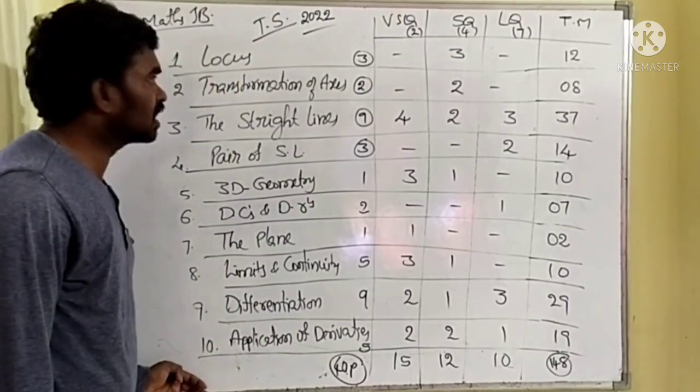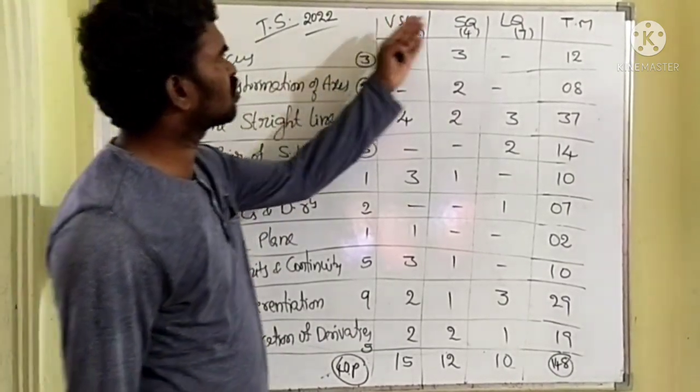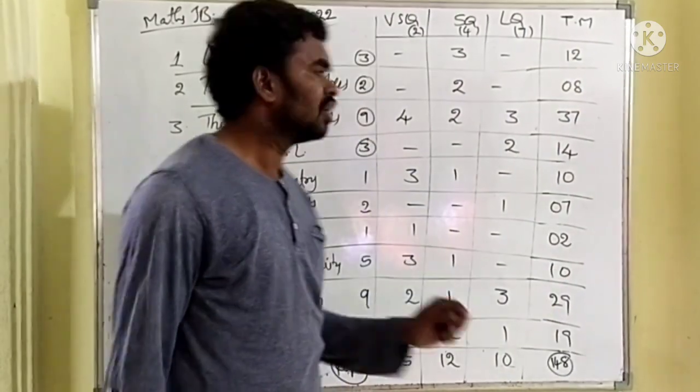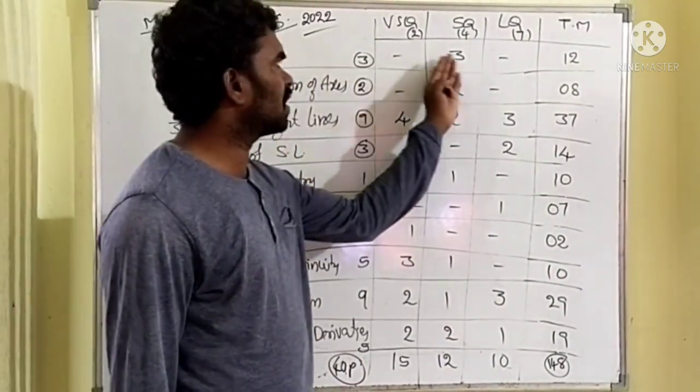See the blueprint. 1, 2, 3, 4, 10 chapters are there in Maths 1B. Very short question, short question, long question, and total marks.